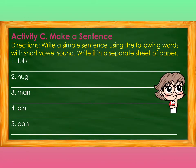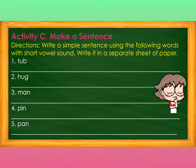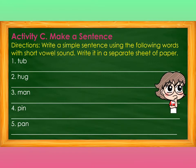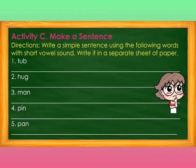Moving on to Activity C: Make a Sentence. Write a simple sentence using the following words with short vowel sounds. Write it on a separate sheet of paper. Number 1: stop — try to use it in a sentence. Number 2: hug — try to use it in a sentence. Number 3: man — try to use the word man in a sentence. Number 4: bean — use the word bean in a sentence. Number 5: pun — try to make and construct it into a sentence.